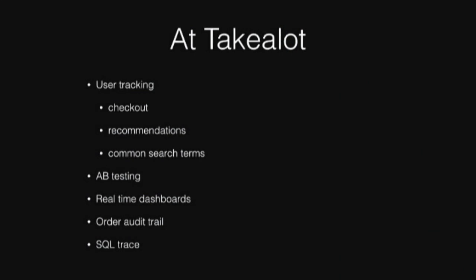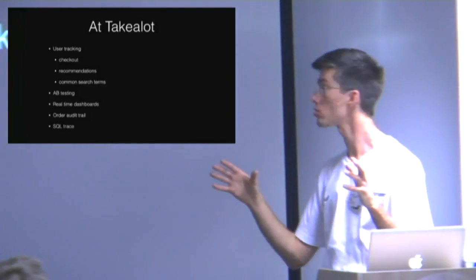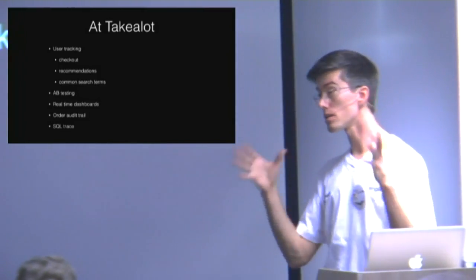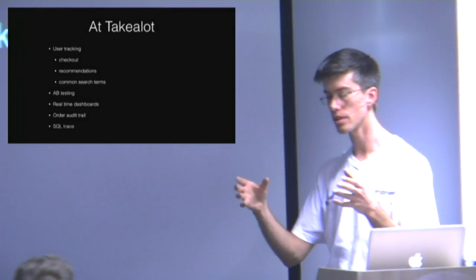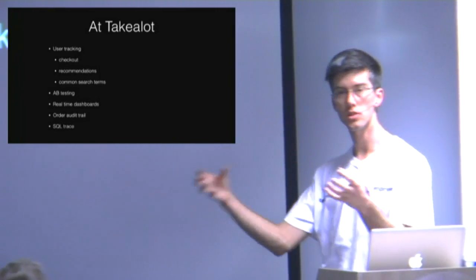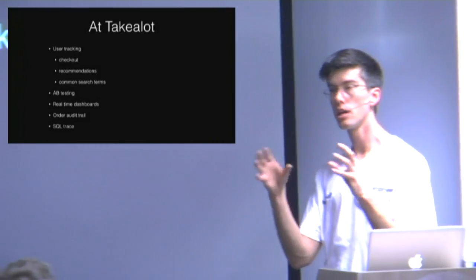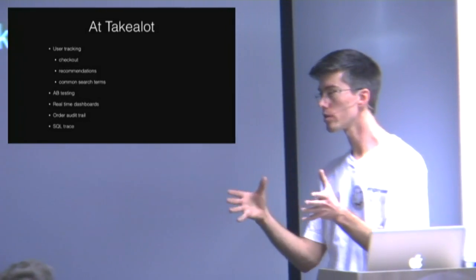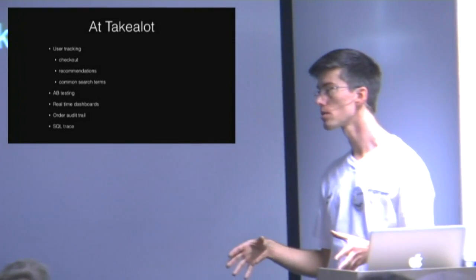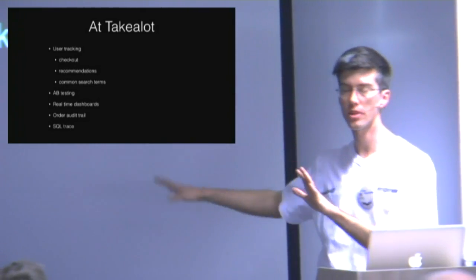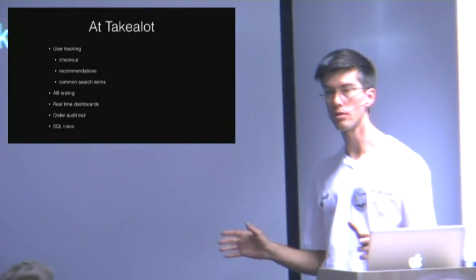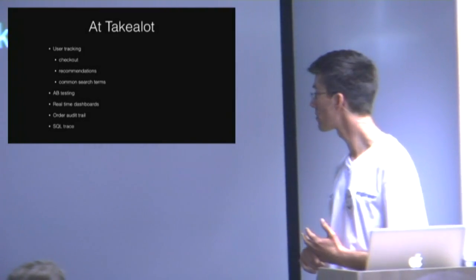At Eclat, we started adopting Kafka earlier this year. We have a big legacy stack and one of the things we're doing is slowly but surely breaking it apart — while keeping the site up — into smaller services that communicate with each other. What we don't want is a monolithic codebase, a monolithic database, and a website that does absolutely everything. There's a separate API for apps and mobile, but it's still a pretty massive stack.